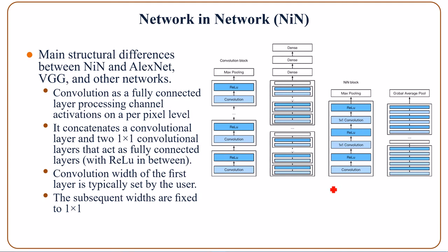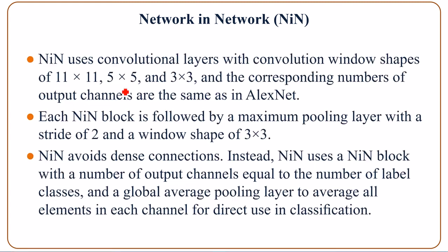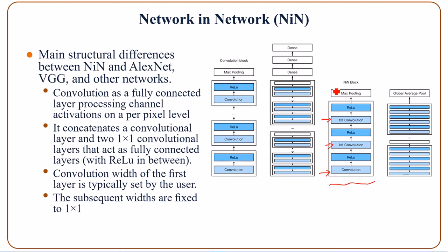This is the basic NIN block, in which we can see there is a convolution layer followed by two 1x1 convolutional layers. The 1x1 convolutional layers act as a fully connected layer. The left side of the figure shows the VGG architecture for comparison. Convolutional layers within NIN use three convolution window shapes: 11x11, 5x5, and 3x3. Each NIN block is followed by a maximum pooling layer with a stride of 2 and a window size of 3x3.